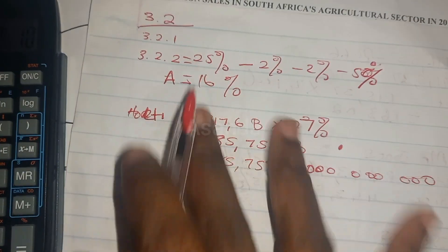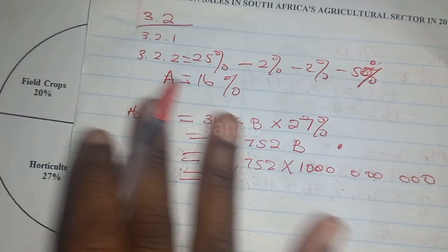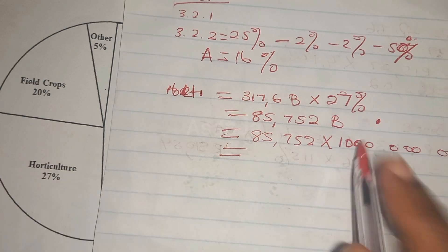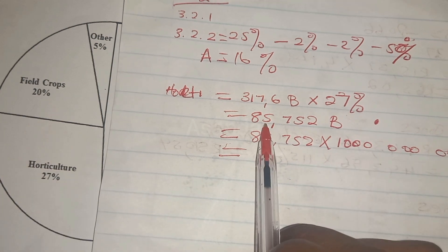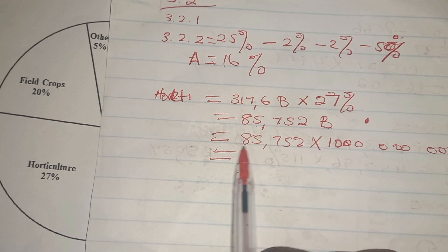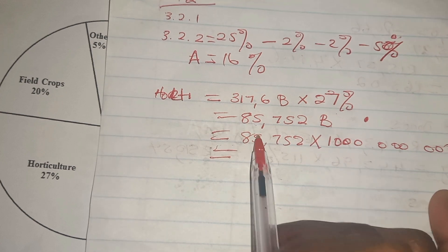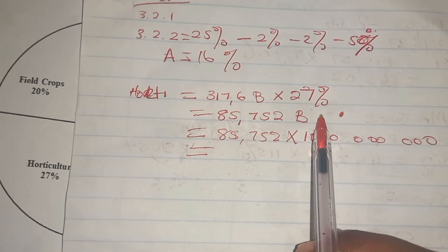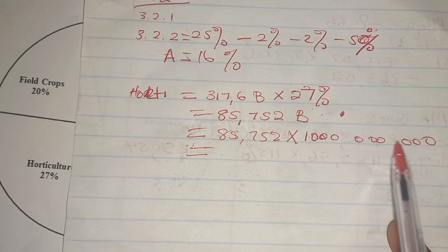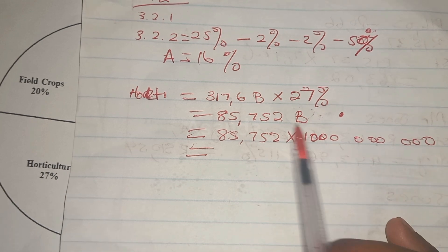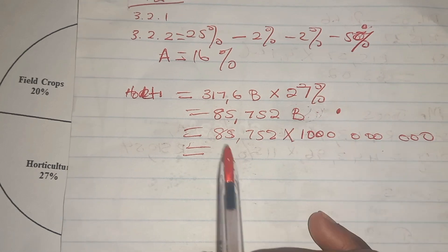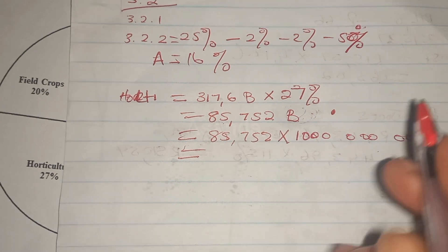Now, we take 317.6 billion and multiply it by the 27 percent horticulture share, which gives us 85.752 billion. To express this in millions, we multiply that number by one billion — the billion shown next to it.